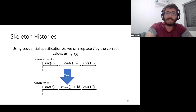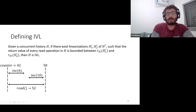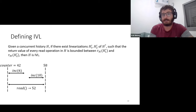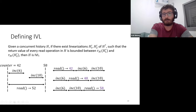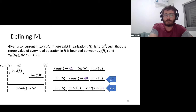We can now define IVL: given a concurrent history H, if there exist two linearizations H1 and H2 of the skeleton history such that the return value of every read operation is bounded between tau(H1) and tau(H2), then H is IVL. Continuing the example: we consider all linearizations of the skeleton history—read before (returns 42), read in between (returns 48), and read after (returns 58)—and apply tau. The read value 52 is bounded between 48 and 58, so H is indeed IVL.